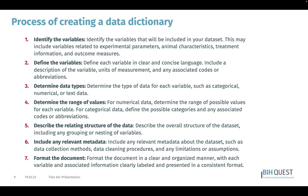The process of creating a data dictionary can be described in seven different steps. First, identify the variables in your dataset. Then define them in clear and concise language and determine the data types for each variable, such as categorical, numerical, or text. If applicable, determine the range of certain values and describe if certain data have a relationship with each other, for instance grouping, group data, or nested variables.